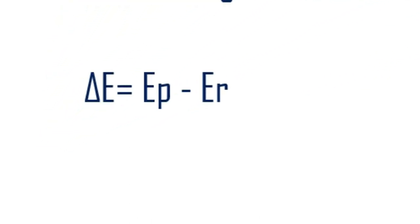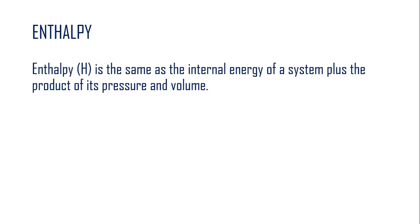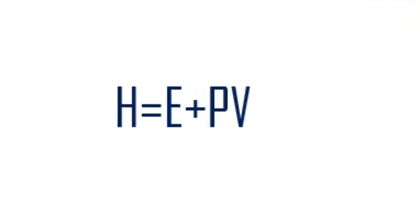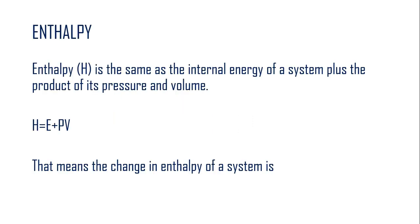Delta E is the energy of the products minus the energy of the reactants. Enthalpy is represented as H. Enthalpy is the same as the internal energy of a system except that you have to add the product of its pressure and volume. The simple formula is H equals E plus PV — that is, enthalpy equals internal energy plus the product of the pressure and volume of that system. The change in enthalpy, delta H, equals HP minus HR — that is, the enthalpy of the products minus the enthalpy of the reactants.